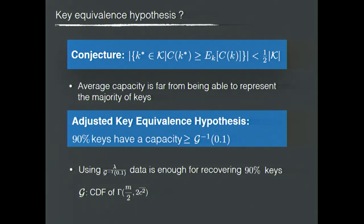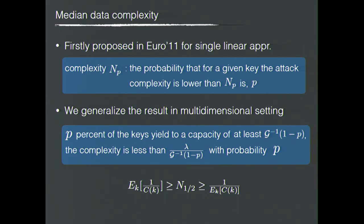This means the average capacity is far from being able to represent the majority of keys. We therefore adjust the key equivalence hypothesis, where g is the cumulative distribution function of the gamma distribution, meaning that using a given amount of data is sufficient to recover 90% of the keys. The median data complexity was first proposed to overcome the problem of infinite average data complexity in single linear attack, with its general definition as follows: for a given complexity N_P, the probability that the attack complexity for a given key is lower than N_P is P.